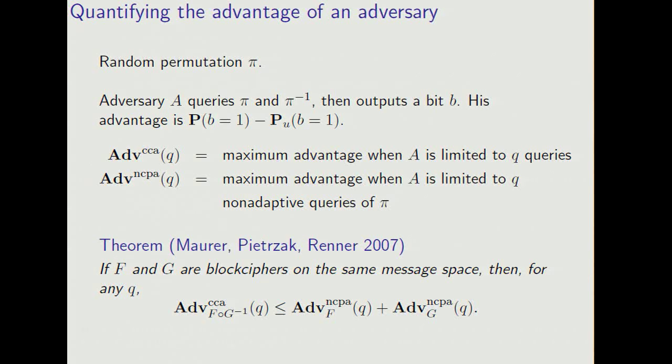The NCPA advantage is when you limit to adversaries that ask non-adaptive queries, and they can only query pi. So that they can make only forward queries. With CCA advantage, there's no such restriction.